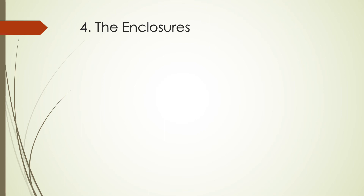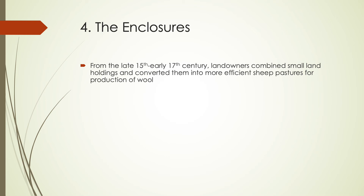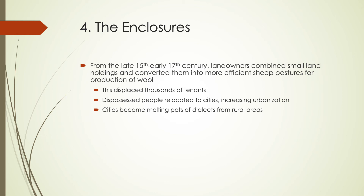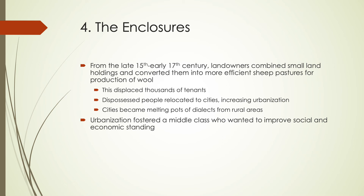The next major thing that happened was what's known as the enclosures. From the late 15th to the early 17th centuries, landowners started combining small land holdings, converting them into more efficient pastures for things like wool, and this displaced thousands of tenants. A lot of them were relocating to cities, increasing urbanization. We see a very big rise in population in the London area, and cities started becoming a melting pot of different dialects from rural areas. All of those very disparate ways of speaking from Middle English started intermingling in these urban areas during the early modern period. This fostered a middle class that wanted to improve their social and economic standing.